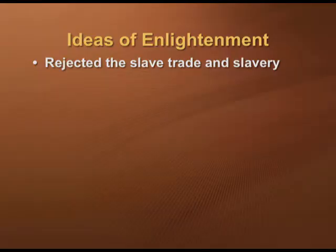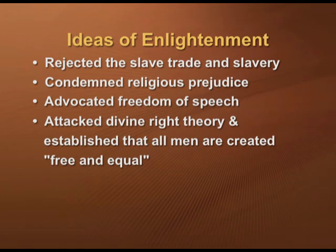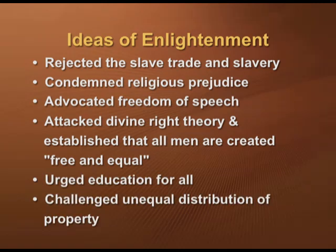These ideas were debated and discussed widely. What are the core social ideas that enlightenment attempted to establish? They rejected the slave trade and slavery. They condemned religious prejudices. They advocated for freedom of speech, attacked divine right theory and established that all men are created free and equal. Enlightenment urged education for all and challenged unequal distribution of property. The philosophers believed that government should be freely elected, as only a freely elected government can ensure order in society. They advocated for separation of powers as the best way to protect human rights and liberties. For them, every social, political and economic problem can be solved through use of reason.